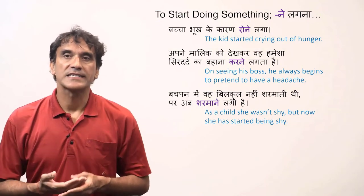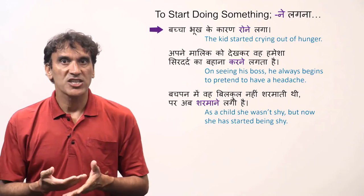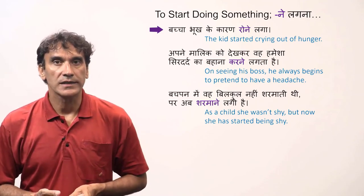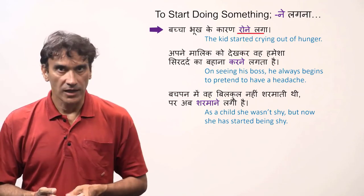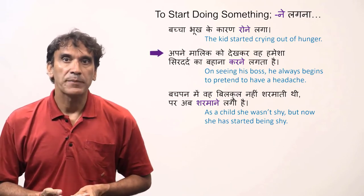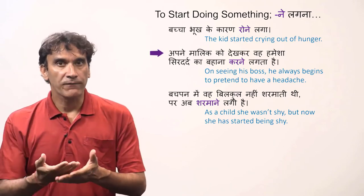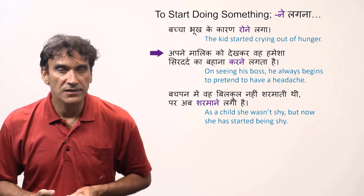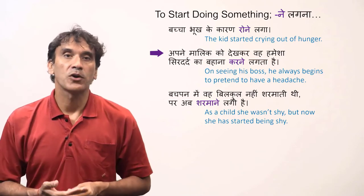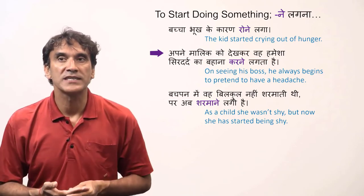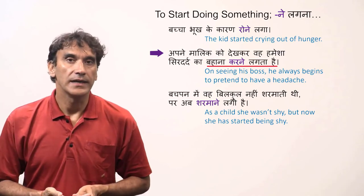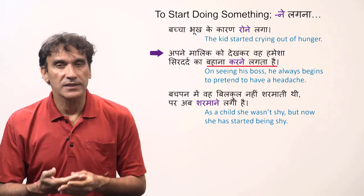Let's take some example sentences. 'Bacha bhook ke karan rone laga' — the kid started crying out of hunger. 'Rone laga' means started crying. On seeing his boss, he always begins to pretend to have a headache — 'bacha na karne lagta hai' — he starts pretending.